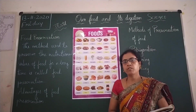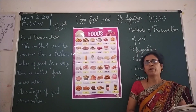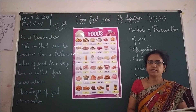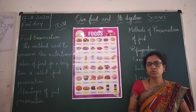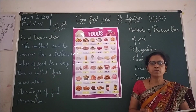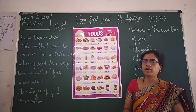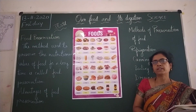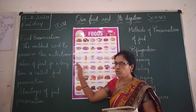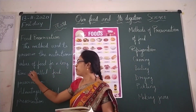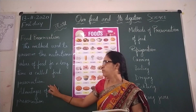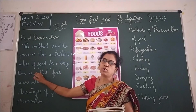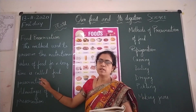Children, if food is kept for a long time, what happens? It gets spoiled. Microorganisms act on the food and make it unfit for eating. So we need to preserve it — we need to preserve the food to prevent it from getting spoiled. The method used to preserve the nutritional value of food for a long time is called food preservation.